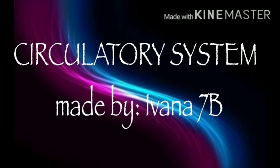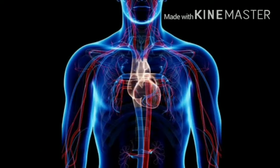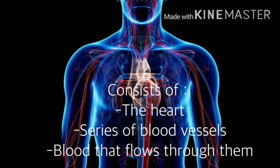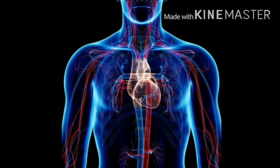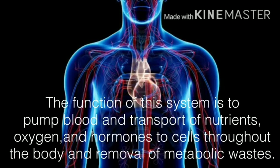Hi guys, so today I'll be discussing the circulatory system. This system consists of the heart, a series of blood vessels, and the blood that flows through them. The function of the system is to pump blood and transport nutrients, oxygen, and hormones to cells throughout the body, and removal of metabolic waste.